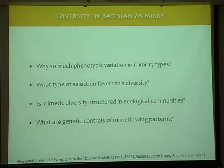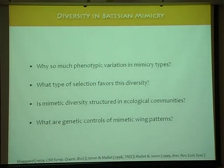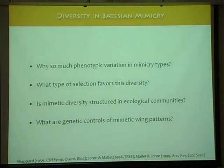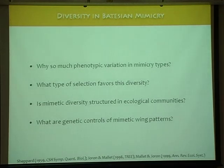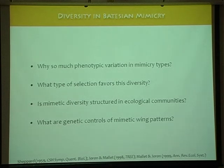One question I became interested in a few years ago was: why is there so much diversity in Batesian mimicry? Various aspects have been studied well, but diversity in mimicry is not something many people have thought about. We do not have one framework where we can hang all these different types of mimicry and explain them. The questions are: why is there so much phenotypic variation in mimicry types? Why is there not just one type? What type of selection favors this diversity? And what are the genetic controls of mimetic wing patterns?